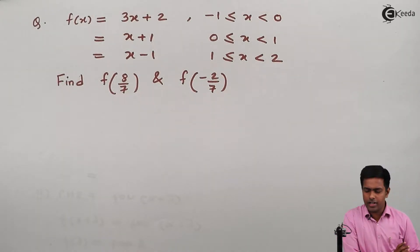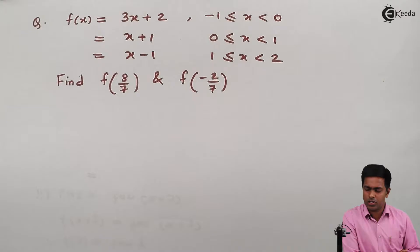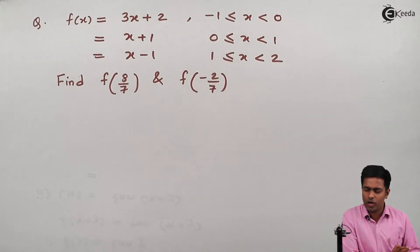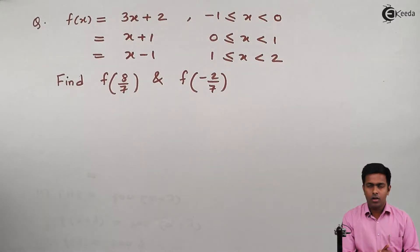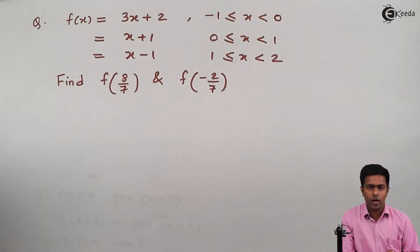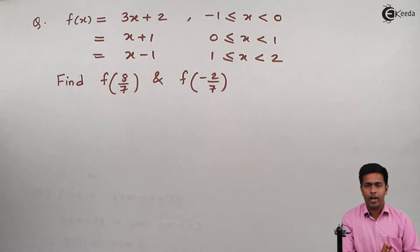Here in this problem we have been given three values of f of x. The first value is 3x plus 2, which is given for the range minus 1 to 0. The second value is x plus 1, which is for the range 0 to 1. And the third value of f of x is x minus 1, which is for the range 1 to 2. We have to find out f of 8 upon 7 and f of minus 2 upon 7.